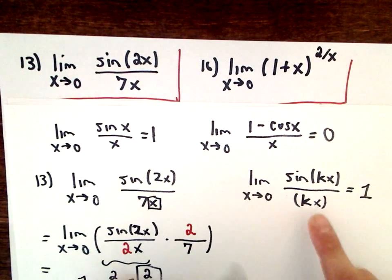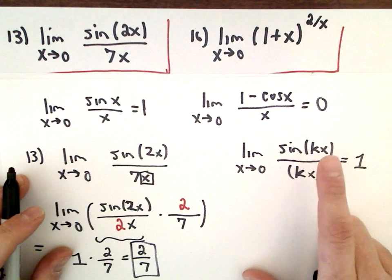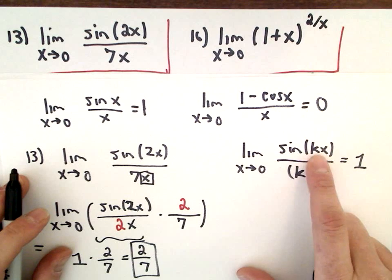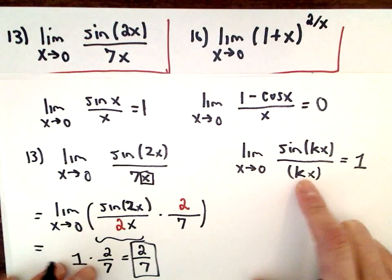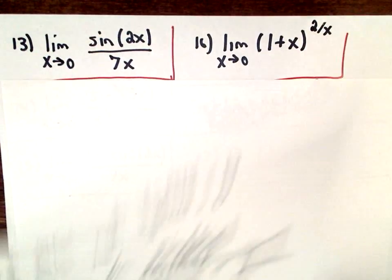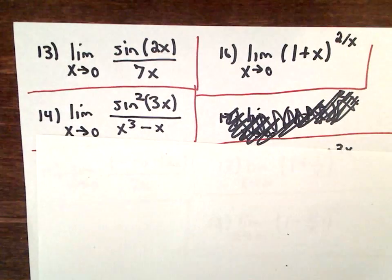So again, the thing is I'm trying to make, some of these may feel like you're just kind of inventing stuff. Whatever's sitting next to the sine, 10x, 12x, 50x, I want 10x, 12x, 50x in the denominator. I'm trying to make that appear. Okay, let's keep going.